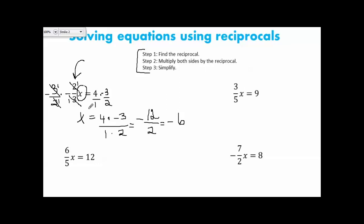Let's look at another one. 6 fifths x equals 12, which means 6 fifths times x equals 12. We find our reciprocal, which is 5 over 6, and multiply both sides by that reciprocal. I'll turn this whole number into a fraction. On the left, I'm simply left with x. On the right, 12 times 5 is 60, and 1 times 6 is 6. 60 divided by 6 is 10.